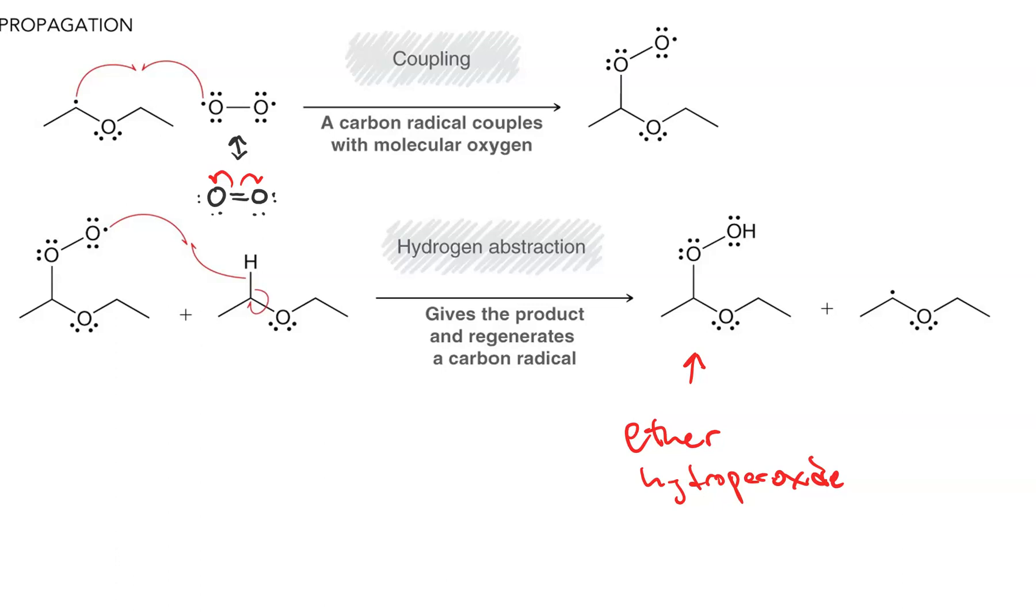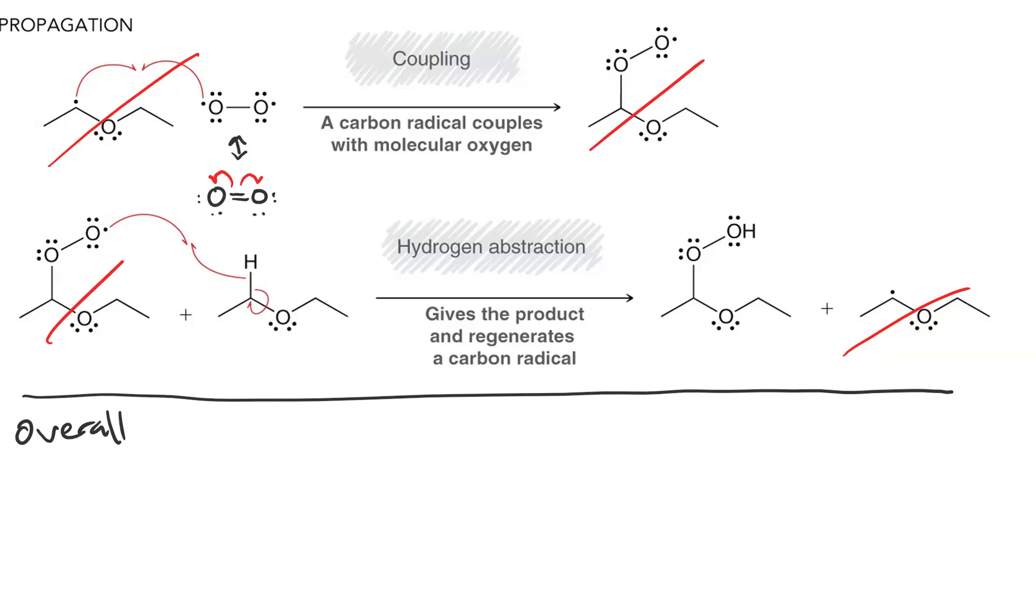The overall reaction will be the sum of these two steps, so we can cancel things that occur on both sides. We can cancel the ether radical and the ether peroxide, and we have diethyl ether plus O2 yields ether hydroperoxide.